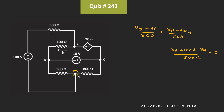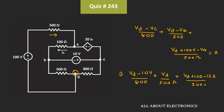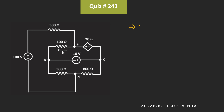This term is the current flowing through the 500 Ohm resistor. Now let's substitute the values of Vc, Vb, and Va. That means we can write: (Vd - 10V) / 800 Ohm + Vd / 500 Ohm + (Vd - 12.5) / 500 Ohm = 0. Simplifying further: 5Vd - 50V + 8Vd + 8Vd + 100 = 0. Solving, we get voltage Vd = -650 / 21, which is equal to -30.95V.